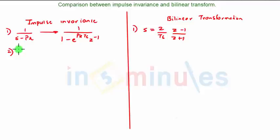The second point: in impulse invariance, the mapping is many to one. In bilinear transformation, the mapping is one to one.